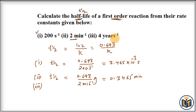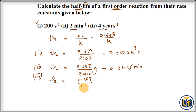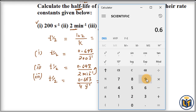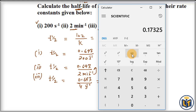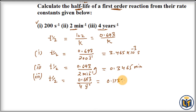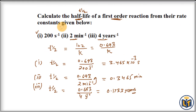For the third part, K = 4 per year. Applying the same formula: T½ = 0.693 / 4. Dividing gives 0.1733. Since the rate constant is in per year, the half-life is 0.1733 years.